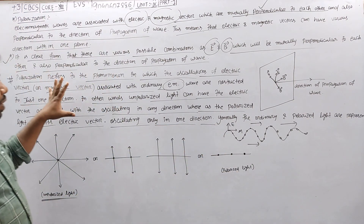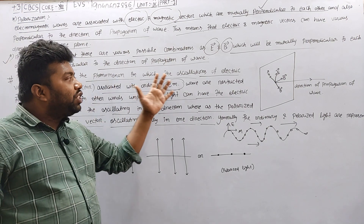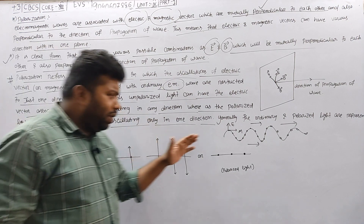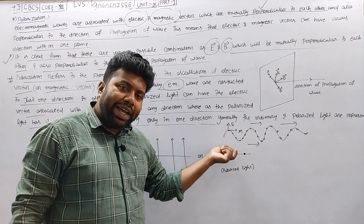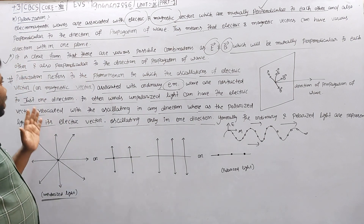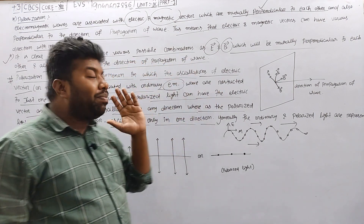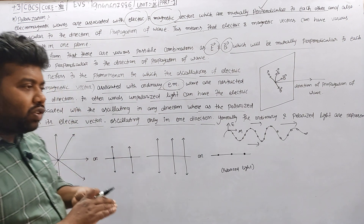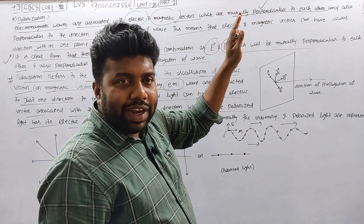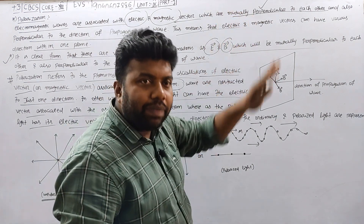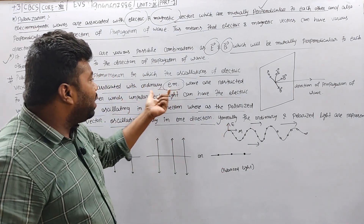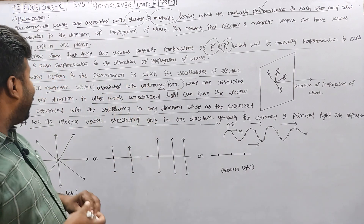Polarization is the phenomenon — the process in which the oscillation of the electric or magnetic vector oscillates with ordinary EM waves and is restricted in one direction.